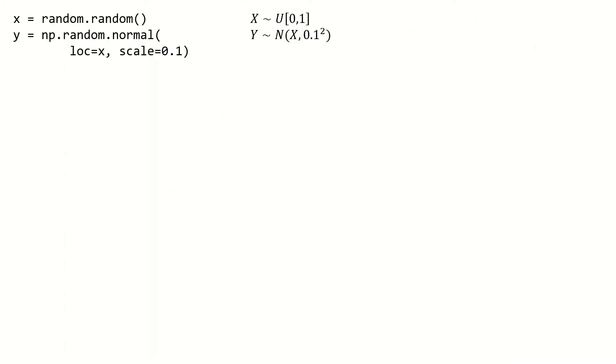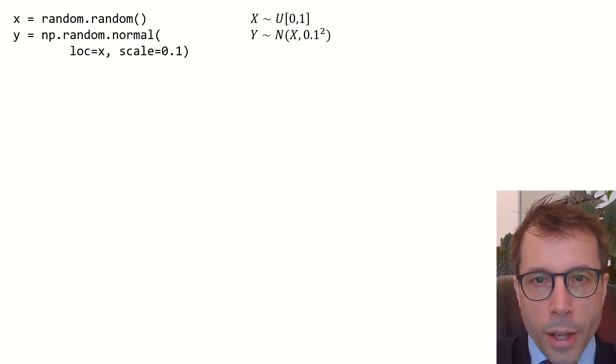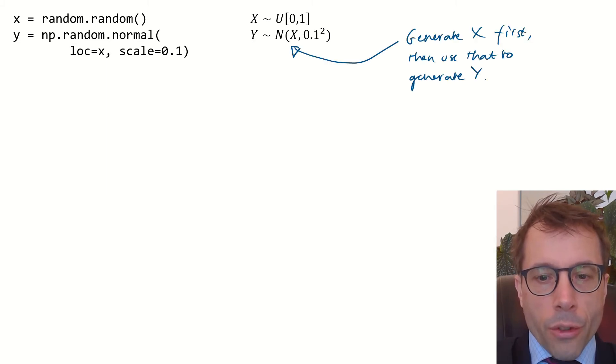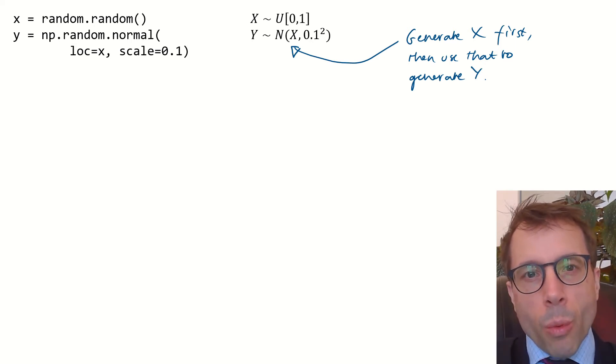Last example. If you see a random variable on the right-hand side of a twiddles expression, you can read it as, first of all, generate X, and then, given that value of X, use that to generate Y, like the code on the left does. Technically, that's not exactly what it means, but for now, just read it as, generate X first, and then generate Y using X.